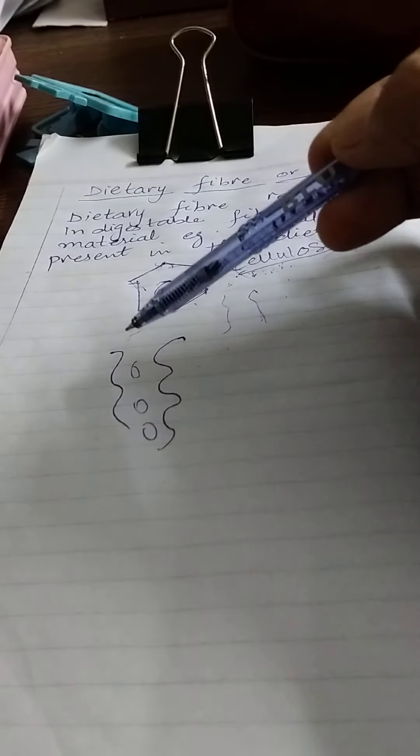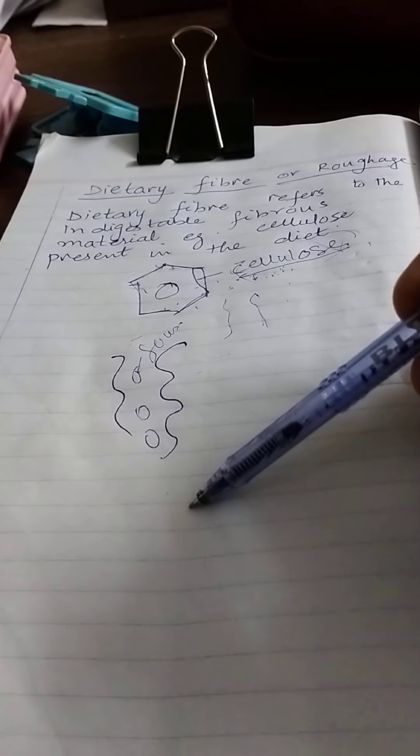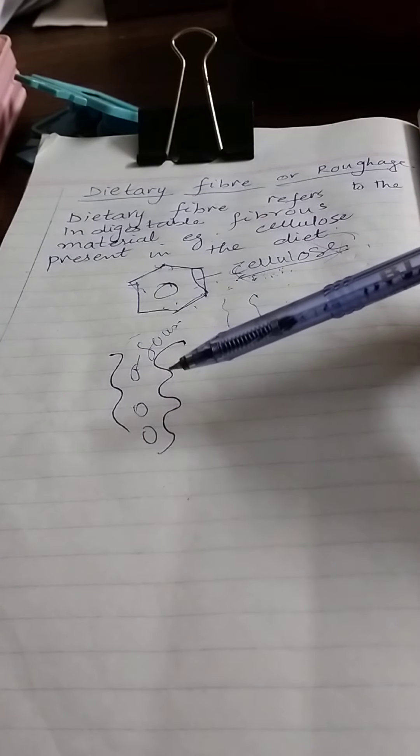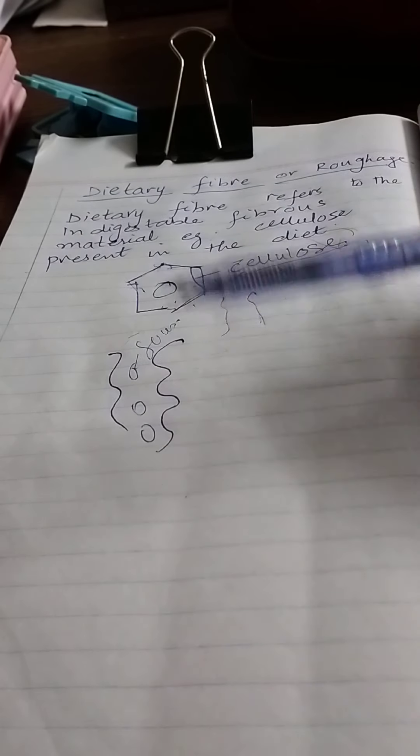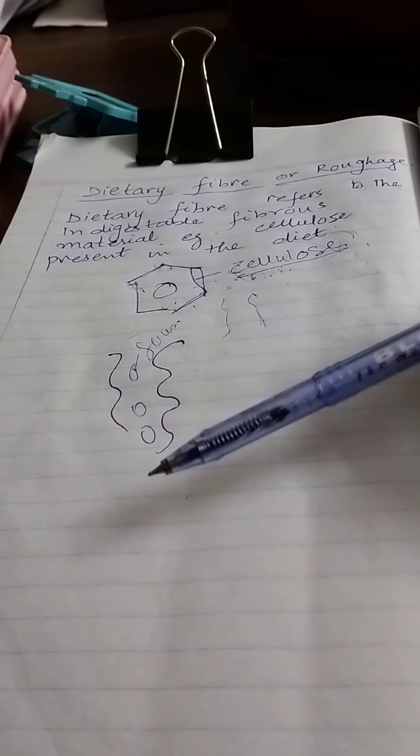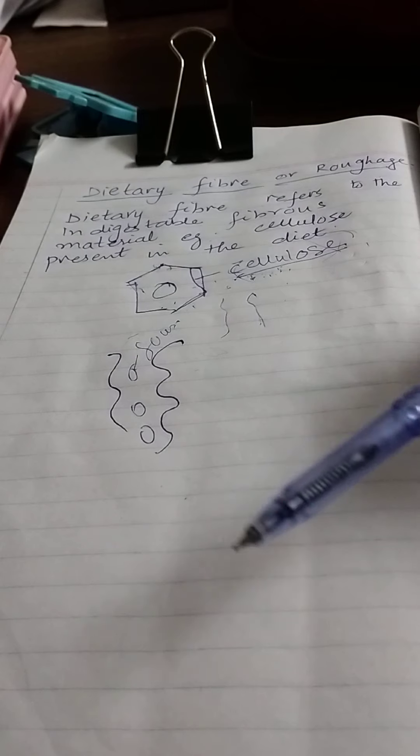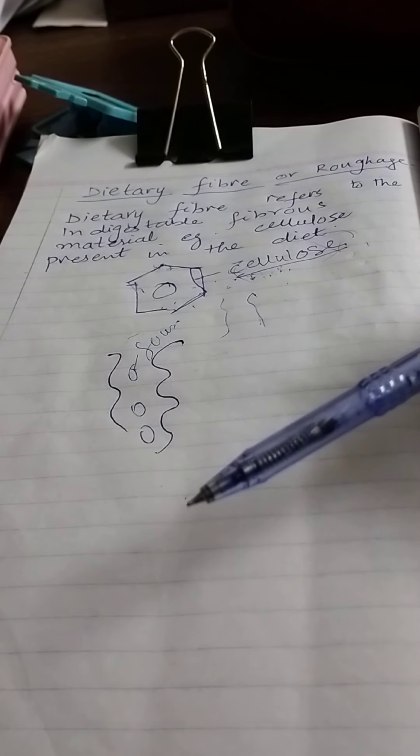If proper peristalsis movements do not occur, the undigested matter in the large intestine cannot be moved along fast enough and too much water will be absorbed.